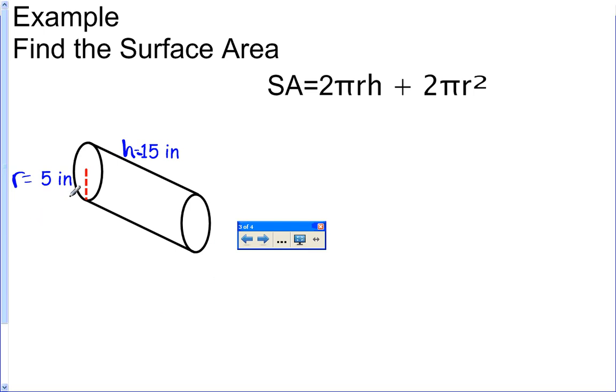When we did the formula for a rectangular prism, I told you that you could assign the base, the height, and the width to any of the values. But here it does matter. This is a radius. The radius is the distance from the midpoint of the circle to the outside of the circle. You have to use this as your r. And then the height is always the distance between the two circles. So it's important that you call this the radius and this the height.